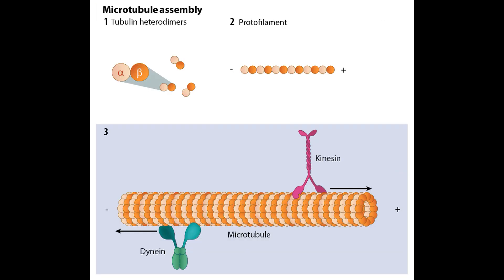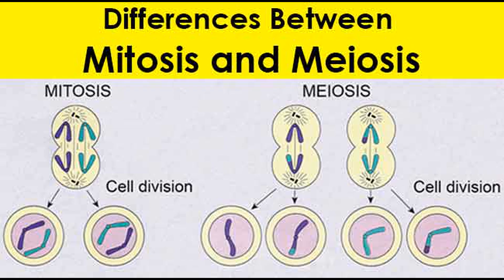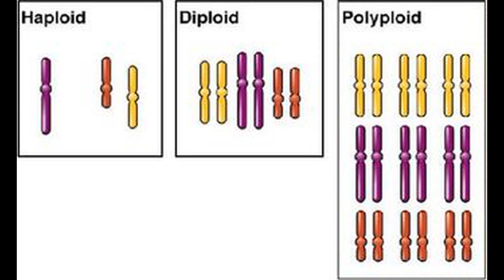Microtubules are essential for cell division in eukaryotes, for which there are two types: mitosis and meiosis. The reason for why there are two is that eukaryotes can do something that doesn't happen in prokaryotes — they habitually change the number of genome copies of their cells, through sex and stuff. The number of genome copies an organism has is called ploidy.